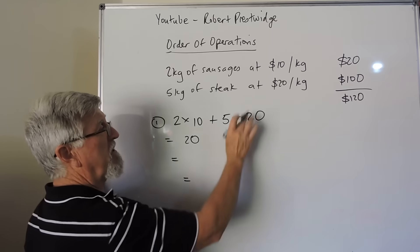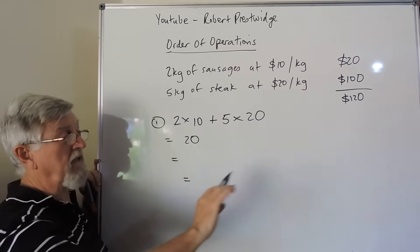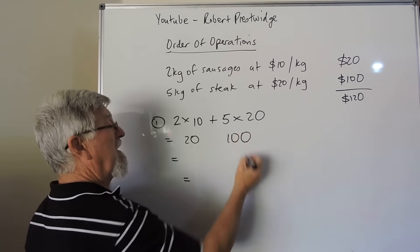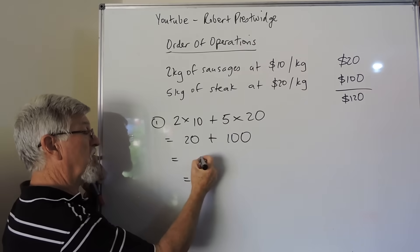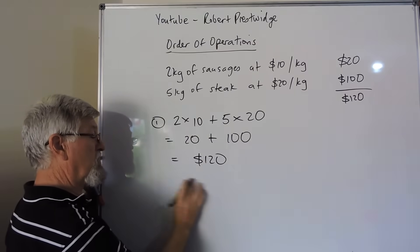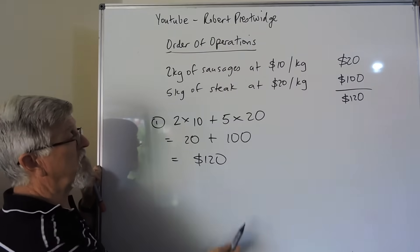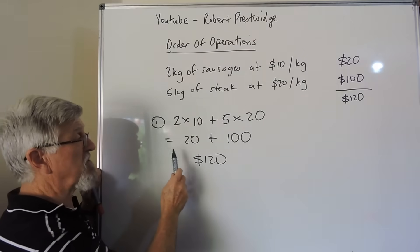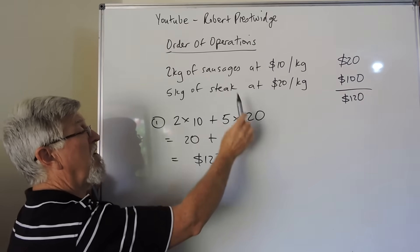Let's have a look what we did over here. We calculated the 20, we calculated the 100. So there's the 20 and there's the 100. And we add the two together to get the correct answer of $120. So what do we have to do first? The multiplication has to come first. Whether it's here, whether it's there.